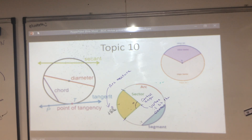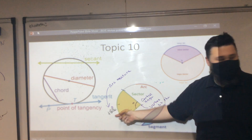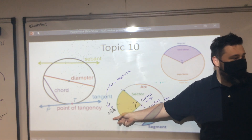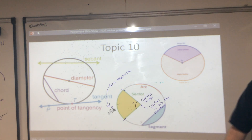If the arc measure is 120, what's the central angle measure? Any central angle is always the same as the arc measure. So if this is 120, this is 120.